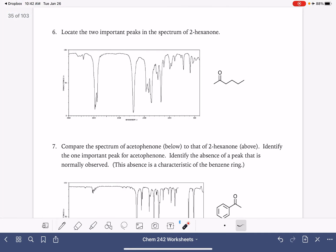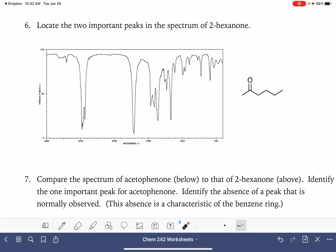And next we have hexanone, a ketone. Let's mark off our spectrum. We're looking for two peaks this time. Of course, the carbon hydrogen peaks. And then here is our carbon oxygen double bond. Always very strong and broad. Not hugely broad, but not sharp and pointy and spiky.